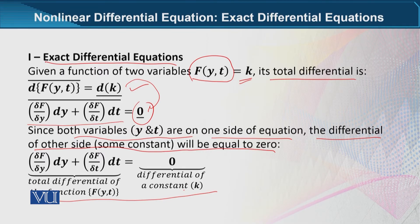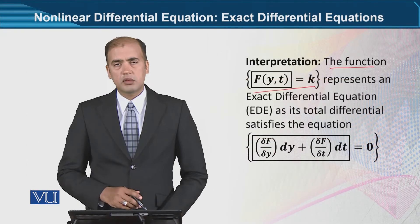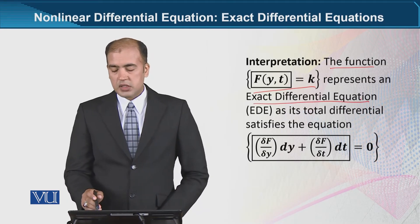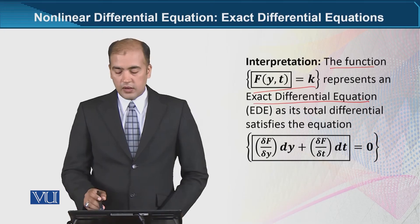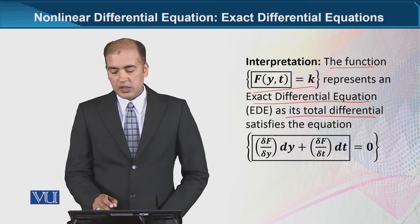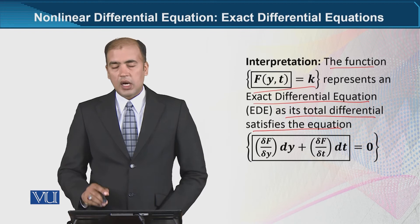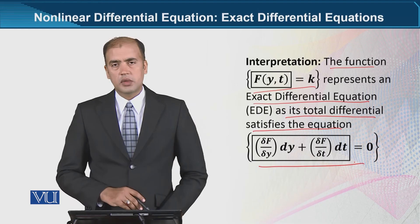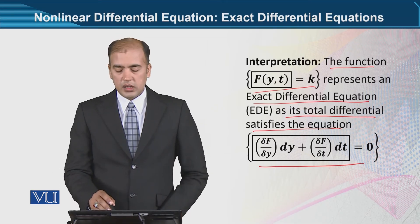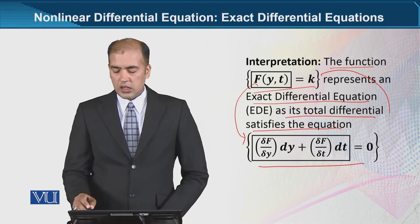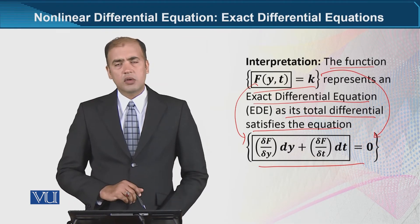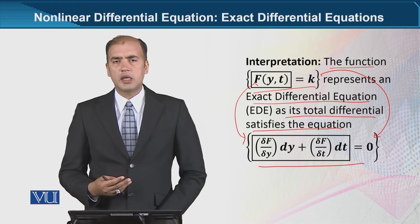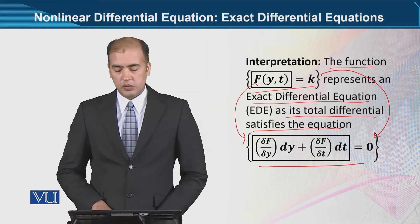The interpretation we can make is: if we are given such a function — which is an implicit function in this case — it will be called an exact differential equation if its total differential satisfies the equation. If we calculate its total differential and it appears in this form, then it has happened here, because when we calculated its differential, the answer came equal to 0. This is currently in symbolic form; if we do it numerically, we will see more examples.